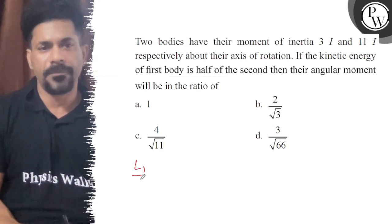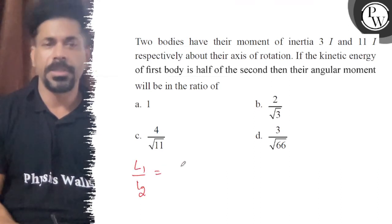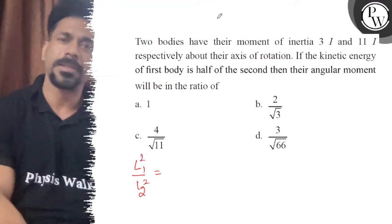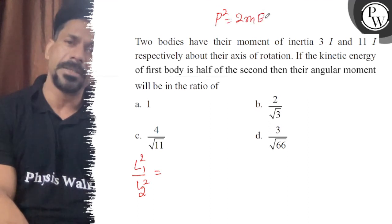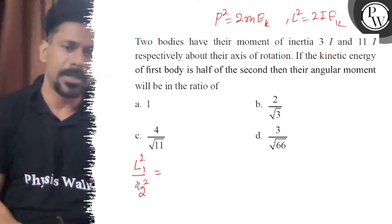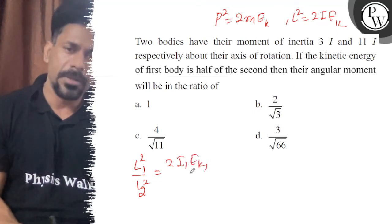So angular momentum L1 upon L2... P squared is equal to 2 mass kinetic energy. So here L squared is equal to 2I times KE. So L1 squared upon L2 squared is 2I1 KE1 upon 2I2 KE2.